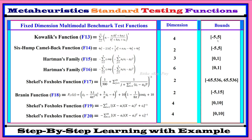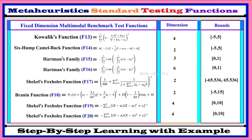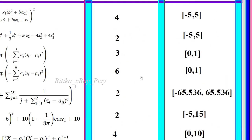Another example of a fixed dimension test function is the speed reducer design optimization problem, which has seven design variables — dimension is seven. Another example is the tension spring design optimization problem with three design variables — dimension is three. So in fixed dimension test functions, the dimension is fixed, and you can see different types along with their boundaries.